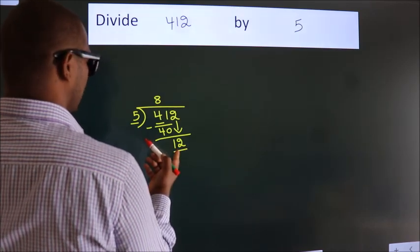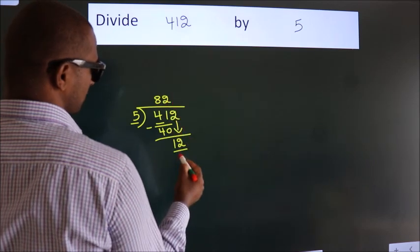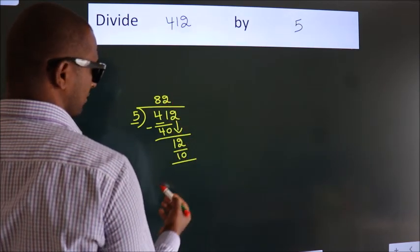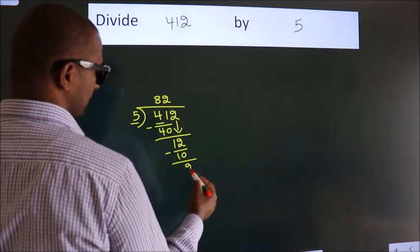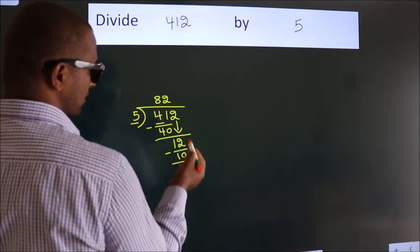A number close to 12 in the 5 table is 5 times 2 equals 10. Now we subtract and get 2. After this, there are no more numbers to bring down.